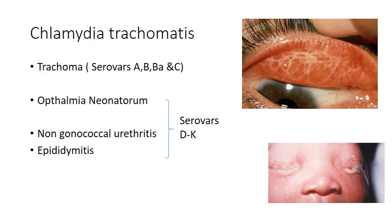The serovars from D to K are known to cause ophthalmia neonatorum as shown in the picture here, and certain genital infections like non-gonococcal urethritis and epididymitis.